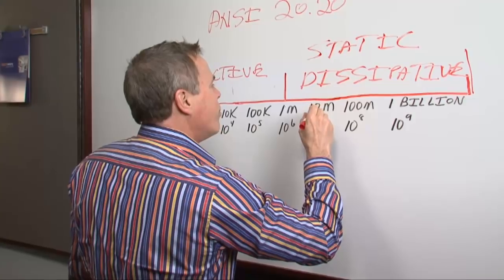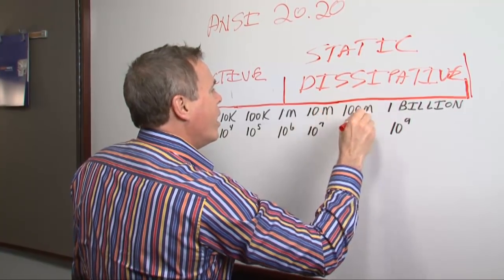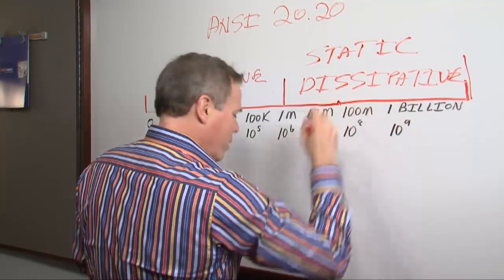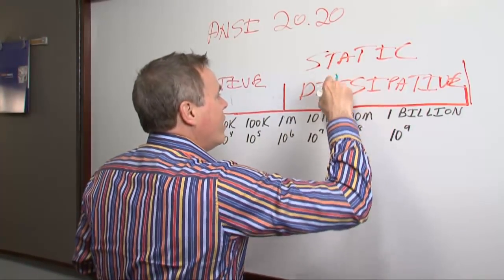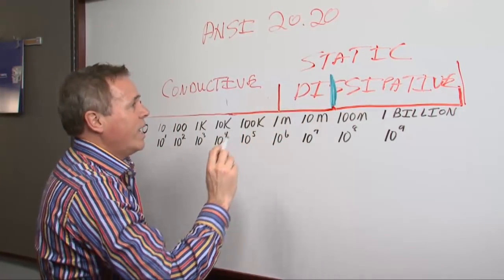ANSI 2020 says that the floor and the person together should have a resistance of less than 35 million ohms. Well, 35 million ohms is somewhere in between 10 million and 100 million. So let's call it right here. And let's use the green marker. And we'll say that that's the highest point of resistance we can have.